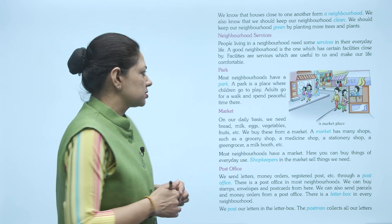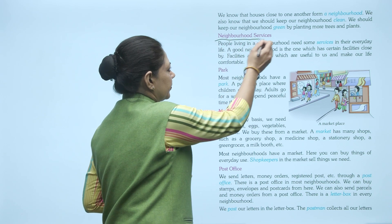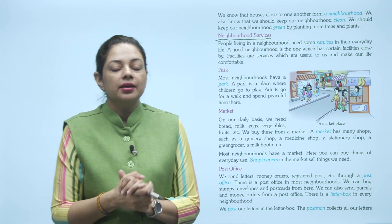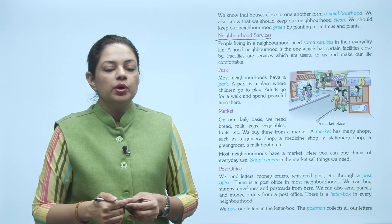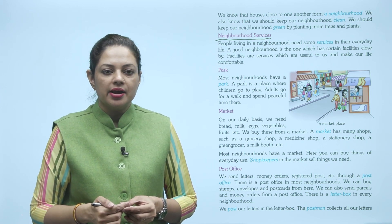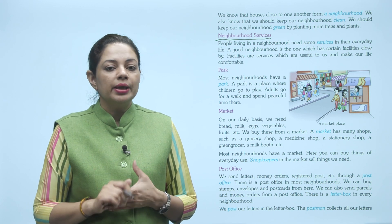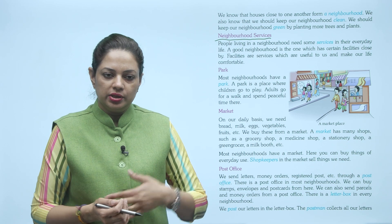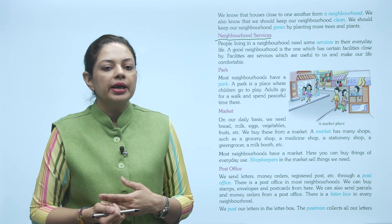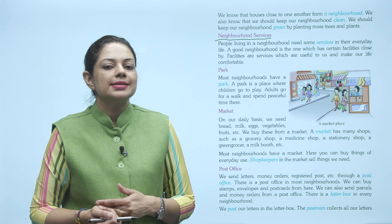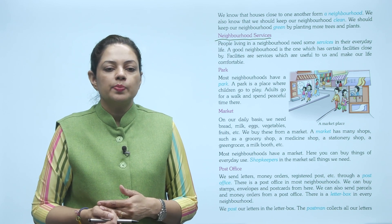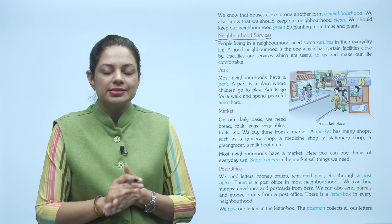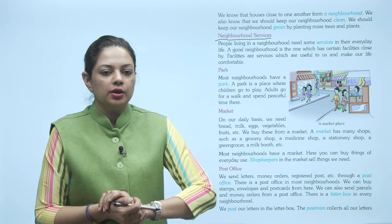Now neighborhood services. Hame baat karte hain neighborhood services ki — joh humare aas paas kya kya services honi chahiye. People living in a neighborhood need some services in their everyday life. Joh log neighborhood mein rehte hain, unhe kuch services, kuch kaam hamesha chahiye hote hain — daily unki zaroorat padti hai. A good neighborhood is the one which has certain facilities close by. Ek accha neighborhood voh hota hai jahan par bohot saari services nearby hi hon, bohot saari facilities hon, suvidhayen hon.